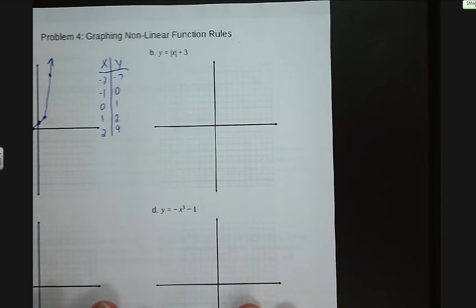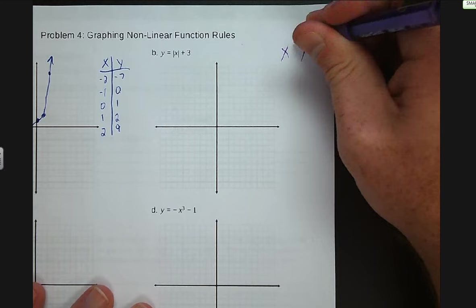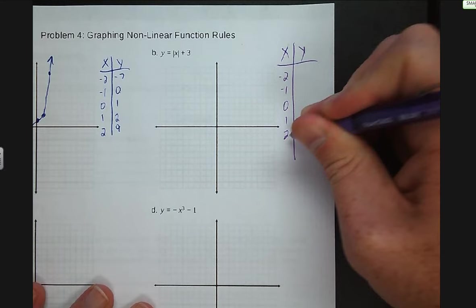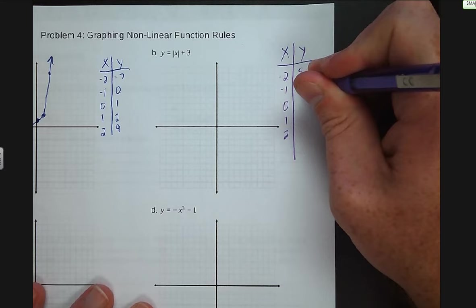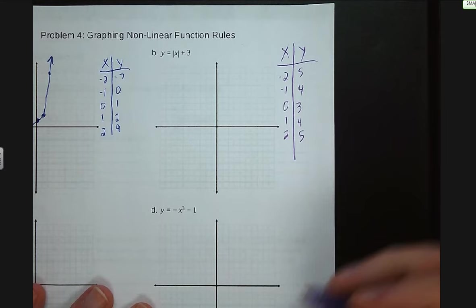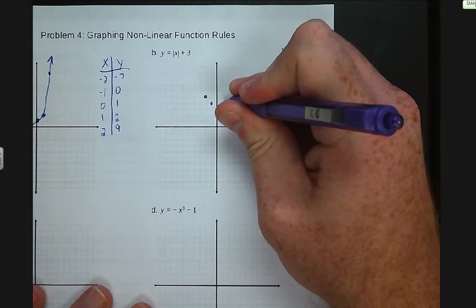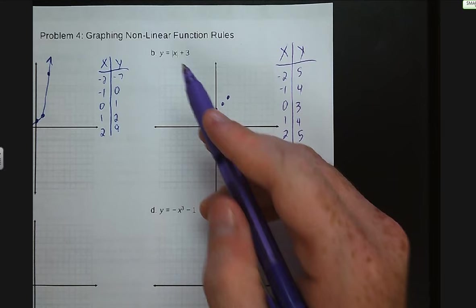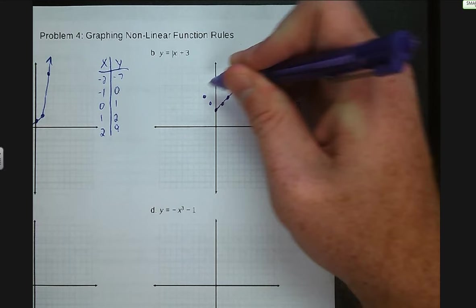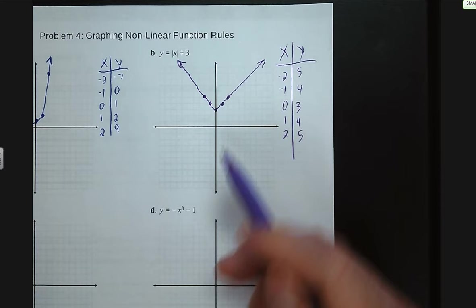The way this graph looks is it curves in and then goes straight — that is a cubed graph. Next up we have an absolute value graph. We have x and y: negative two, negative one, zero, one, two. The absolute value of negative two is 2 plus 3 is 5, then 4, 3, 4, 5. When graphing these points: negative two and five, negative one and four, zero and three, one and four, two and five. These are going to be straight lines that go to the end of your graph and form a V — that is what an absolute value graph looks like.